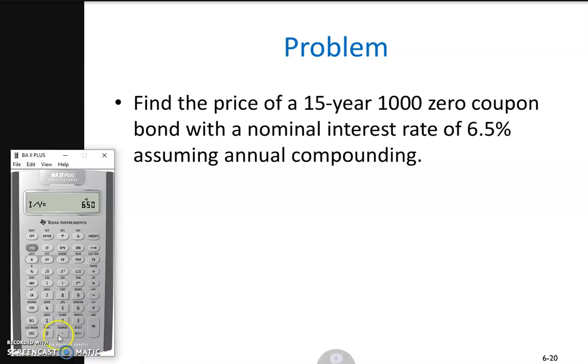I have zero PMT because this is a zero coupon bond with no annual coupon payments. The future value equals $1,000. I compute PV, which gives me the price or present value of the bond equal to $388.83.